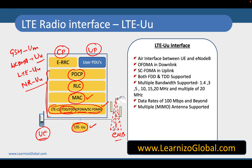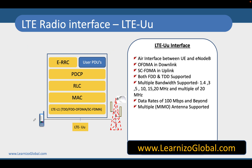The communication between the UE and the eNodeB has both control plane and user plane communication. Control plane communication is handled by the RRC protocol, which stands for Radio Resource Control. The user plane carries user PDUs imposed on the PDCP layer.